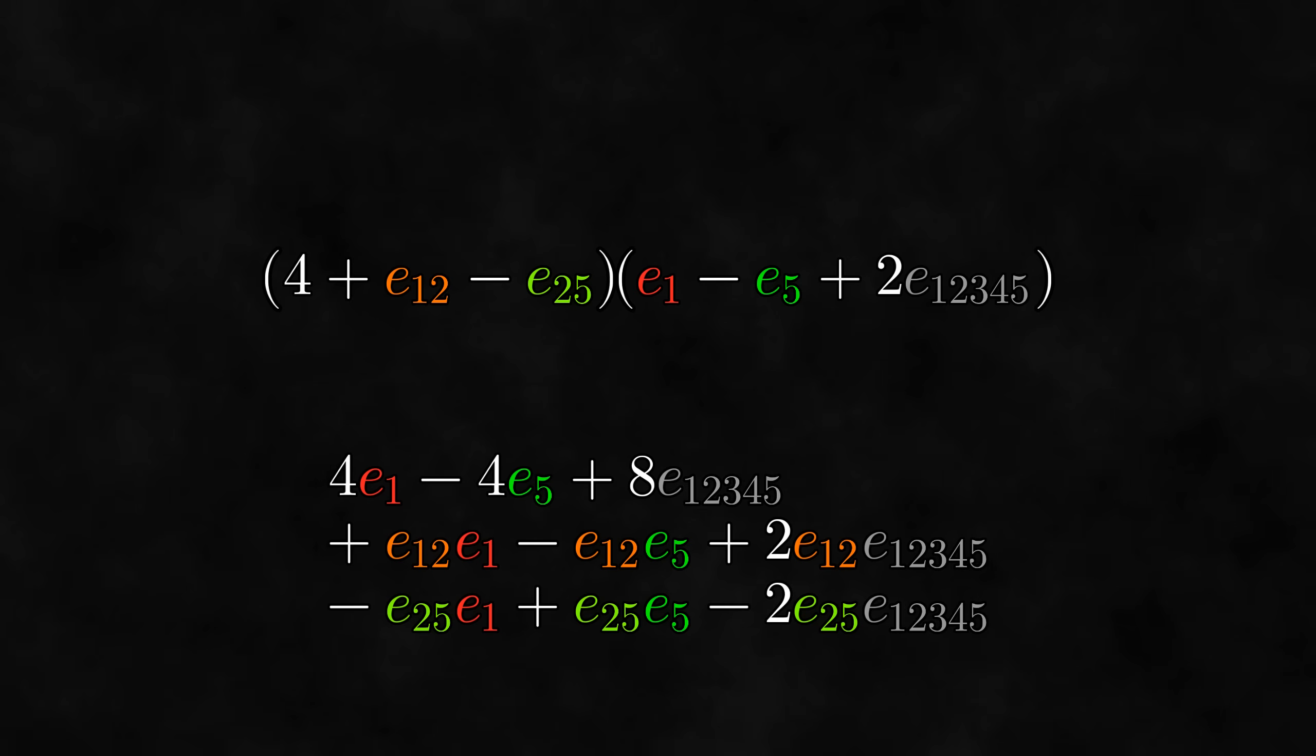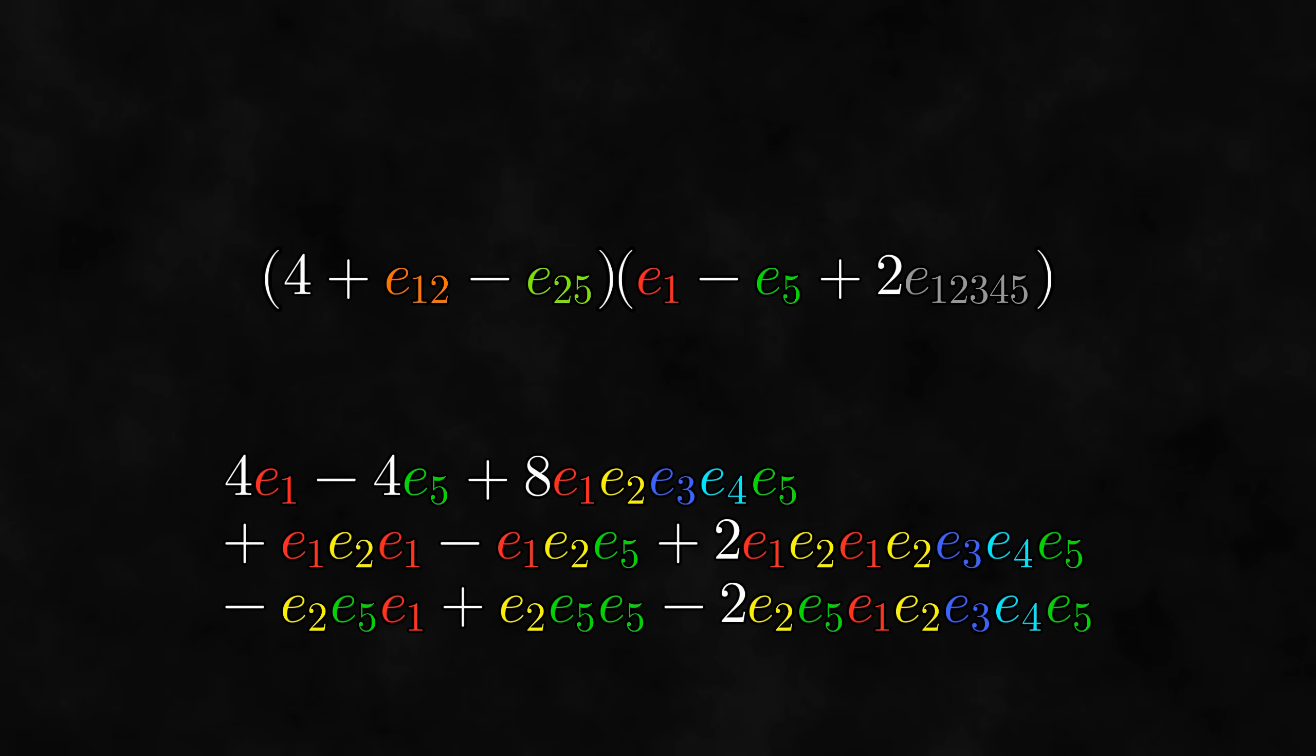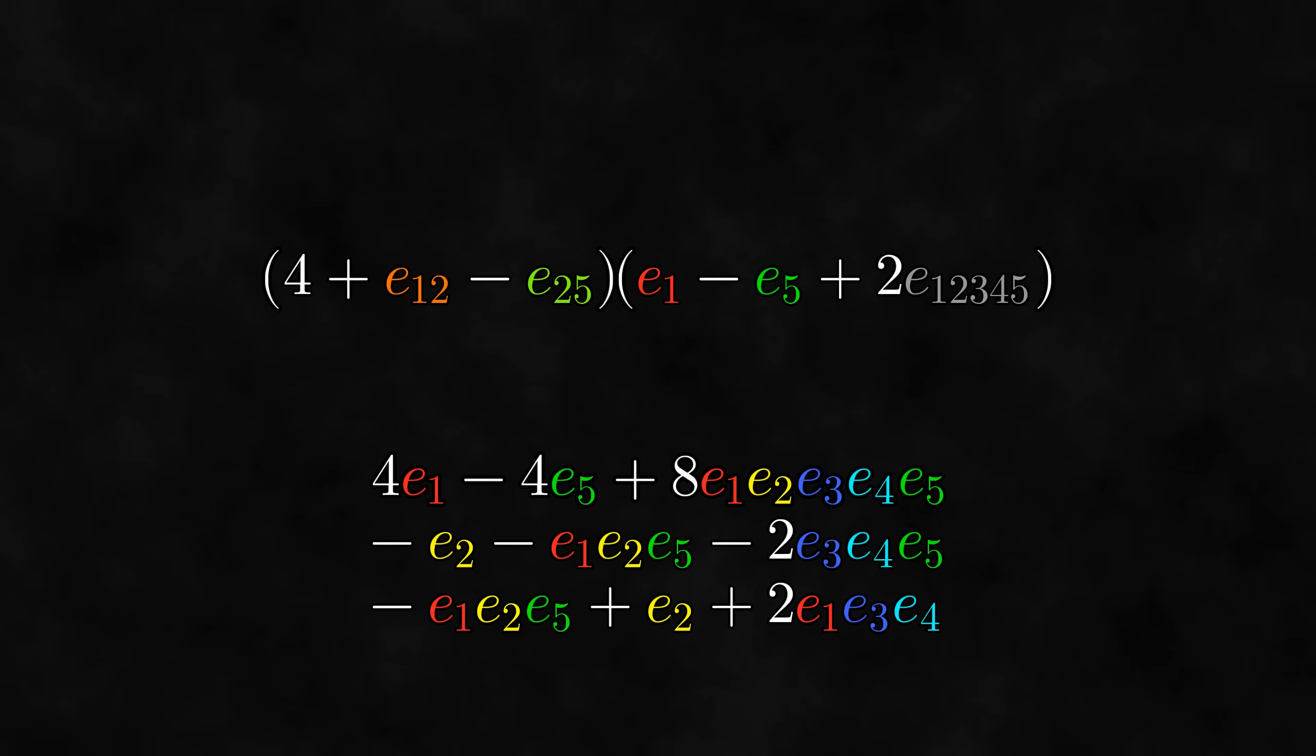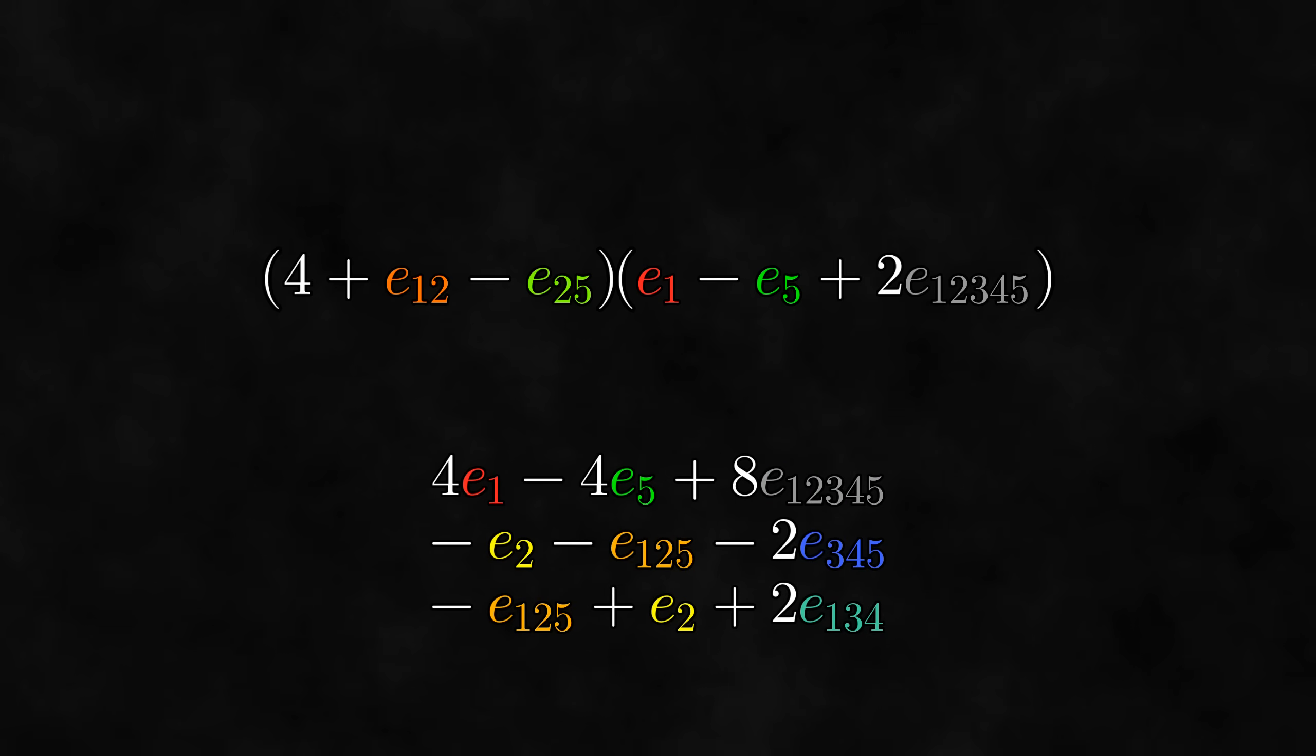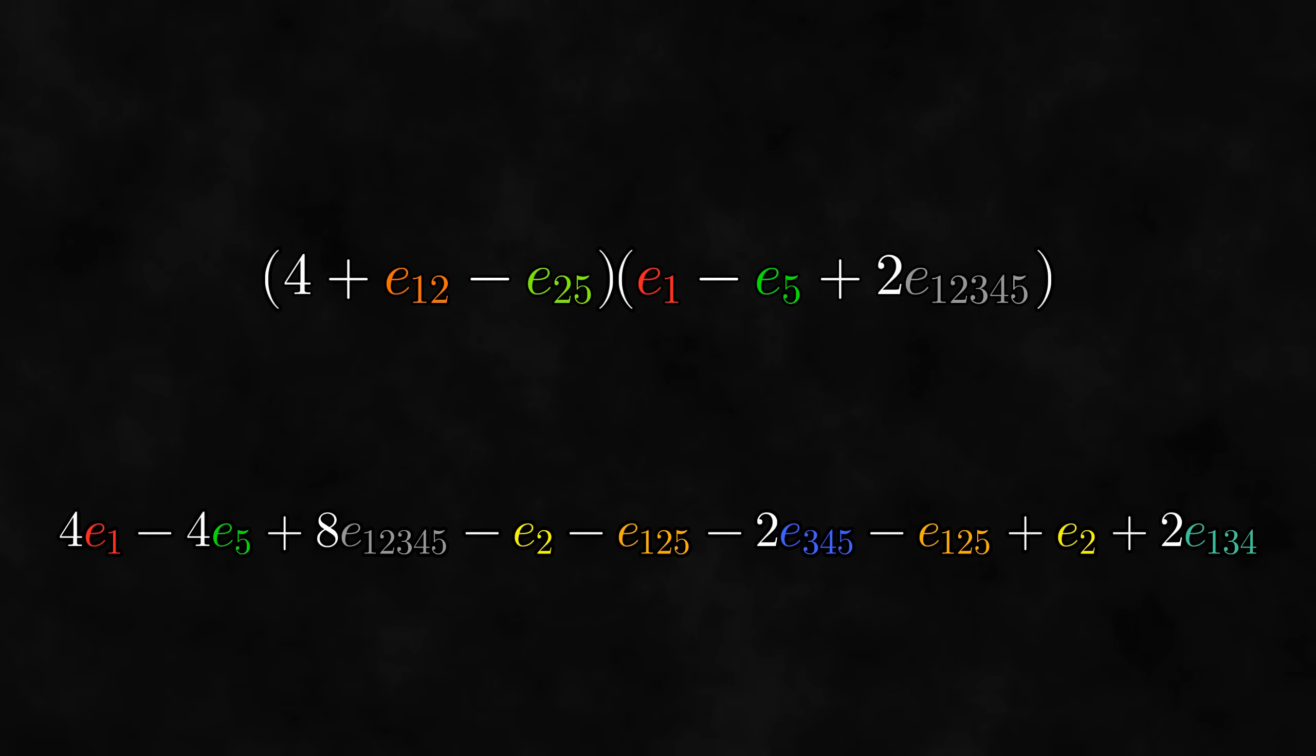Let's look at a more complicated example that involves higher-grade objects. Let's calculate this product. The first step in calculating any product is distributing. At this point, we can expand the basis multivectors into products of basis vectors. Now, we can sort the basis vectors in each term by swapping the basis vectors, adding minus signs each time. Notice that some of these terms require a lot of swaps. You need to be careful to keep track of your minus signs when doing this. Once the basis vectors are all sorted, the square of any of the basis vectors disappears since every basis vector squares to one. We can now unexpand all of the vector products. At this point, these two e2 terms cancel and these two e125 terms combine, producing this final result.